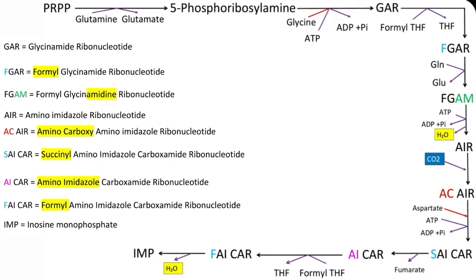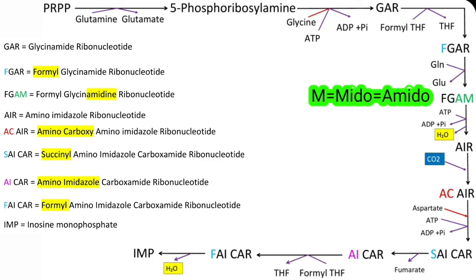In the next reaction, FGAR is converted to FGAM. The difference between FGAR and FGAM is M — M for amido group. So in this reaction, an amido group is transferred from glutamine, which is converted to glutamate. As the amido group is transferred, the enzyme is called Amido Transferase. This reaction also requires energy, supplied by ATP.